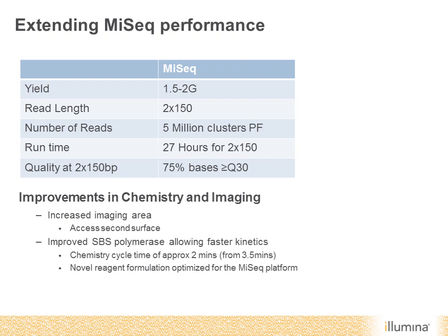This is the performance of the MiSeq as it is today. You can achieve one and a half to two gigabases of yield from paired 150 base reads using 5 million clusters passing filters, taking just over a day. The 2012 performance update will allow MiSeq to generate seven gigabases of data from paired 250 base reads, with reads up to 15 million and a runtime just under 24 hours — achieved by improving the sequencing polymerase for faster kinetics, reducing chemistry cycle time from three and a half minutes to approximately two.